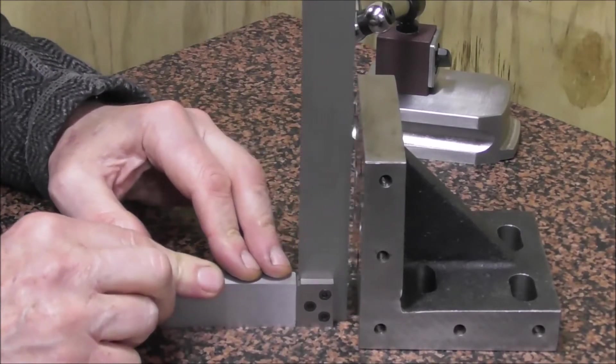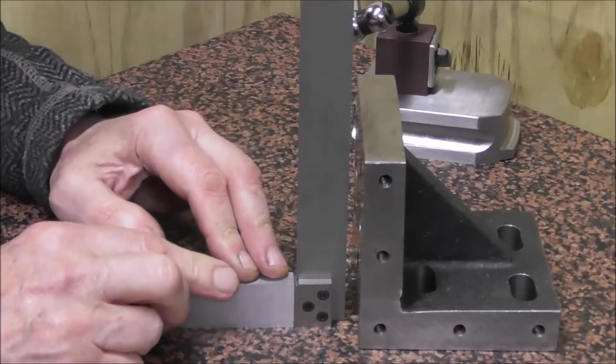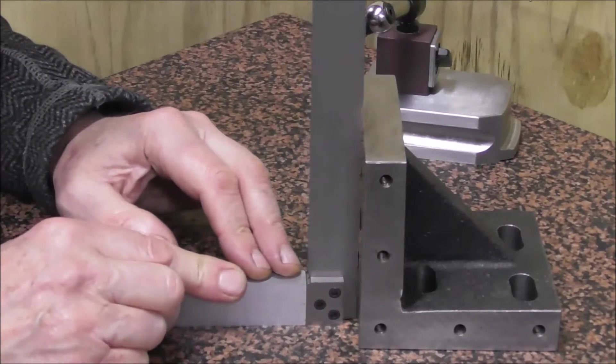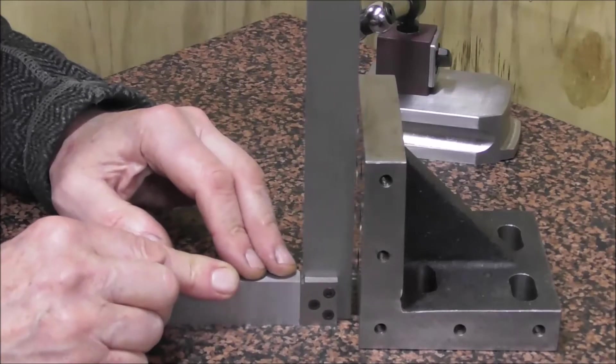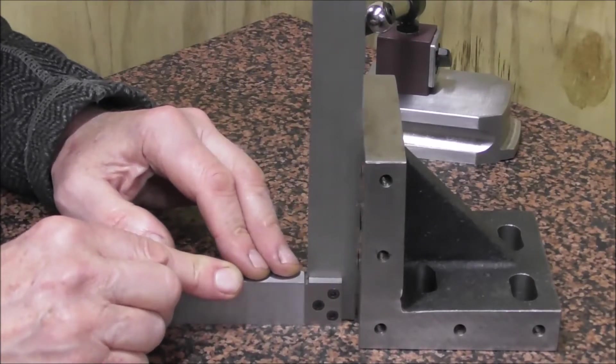If there's a triangle of light, you know it's not very square. The problem with that is you don't know how much out of square it is. Is it one thou out? Is it quarter of a thou out? Or is it three thou out? You just don't really know.